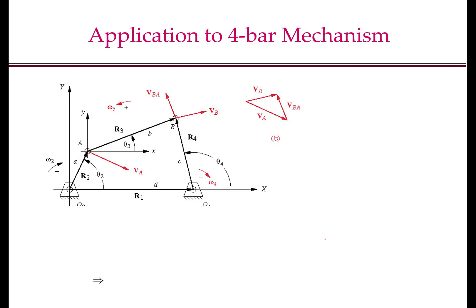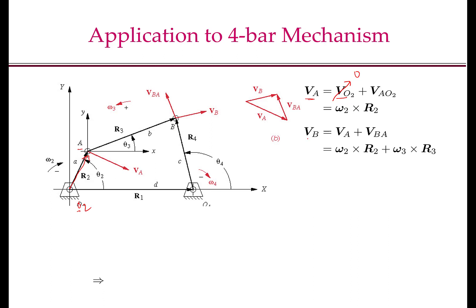Let's apply this to the 4-bar mechanism, starting with link O2A. The velocity of point A is VA equals zero (since O2 is fixed) plus omega_2 cross R2, where R2 is the vector O2A. The velocity of point B is VB equals VA plus VBA, where VA equals omega_2 cross R2, and VBA equals omega_3 cross R3, with omega_3 being the angular velocity of link 3 and R3 the vector AB.